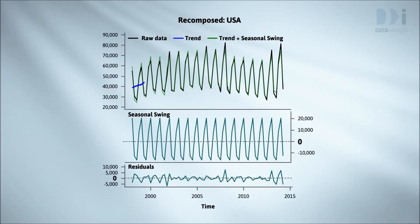For this series, the residuals are small compared to the movement of the trend, which ranges from about 40,000 to 60,000, and the seasonal swings, which go between about plus or minus 20,000. Now this is what's called an additive decomposition. It assumes the underlying seasonal swings are the same every year, and they add to the trend value, as we've seen. They're only useful if the seasonal swings look similar.